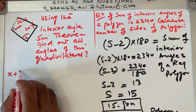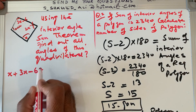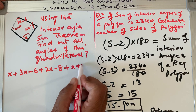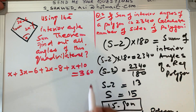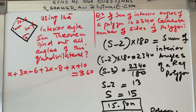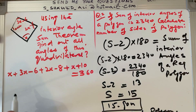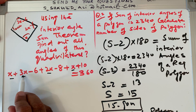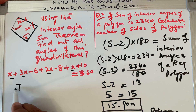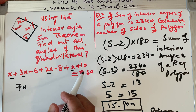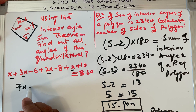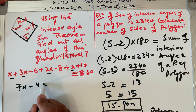Applying the theorem: x plus (3x minus 6) plus (2x minus 8) plus (x plus 10) equals 360. Adding the x terms: x plus 3x is 4x, plus 2x is 6x, plus x is 7x. For the constants: 10 minus 8 is 2, minus 6 gives minus 4. So 7x minus 4 equals 360.